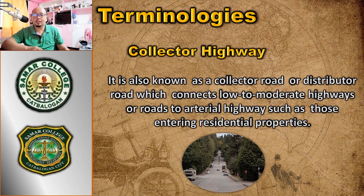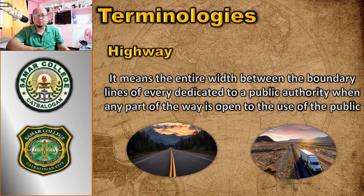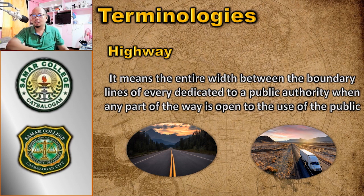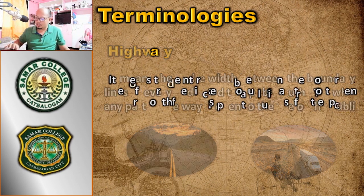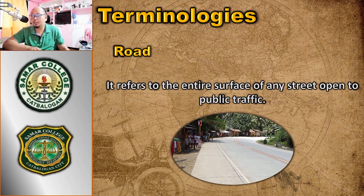Highway means the entire width between the boundary lines of a road — the full width of the roadway between its boundary lines is called a highway. Road, on the other hand, refers to the entire surface of any street open to public traffic. That is the difference between highway and road.